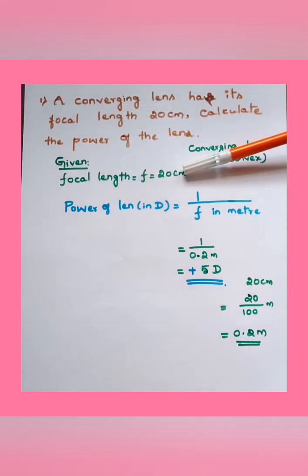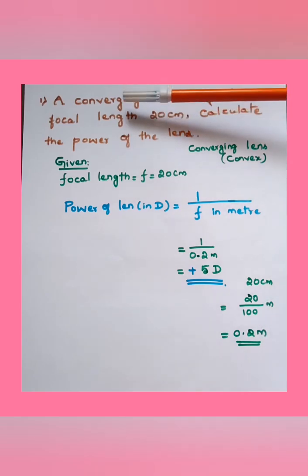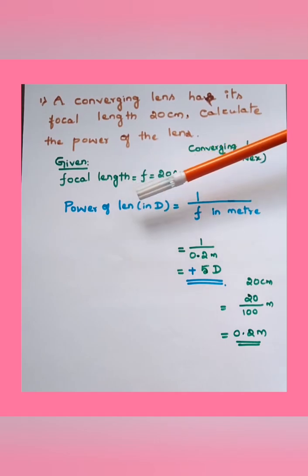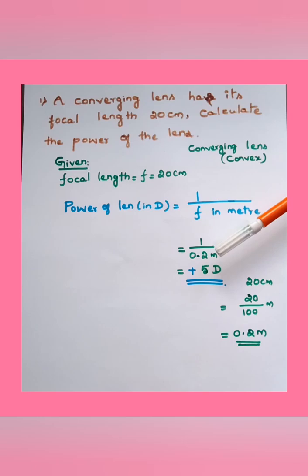What type of lens is it? They have given it is a converging lens. We know that converging lens is a convex lens. The formula to calculate power of a lens in diopter is equal to 1 by focal length f in meter. Substitute the value in meter: 1 by 0.2 meter, which gives us 5D. Since it is a convex lens, the sign is plus.